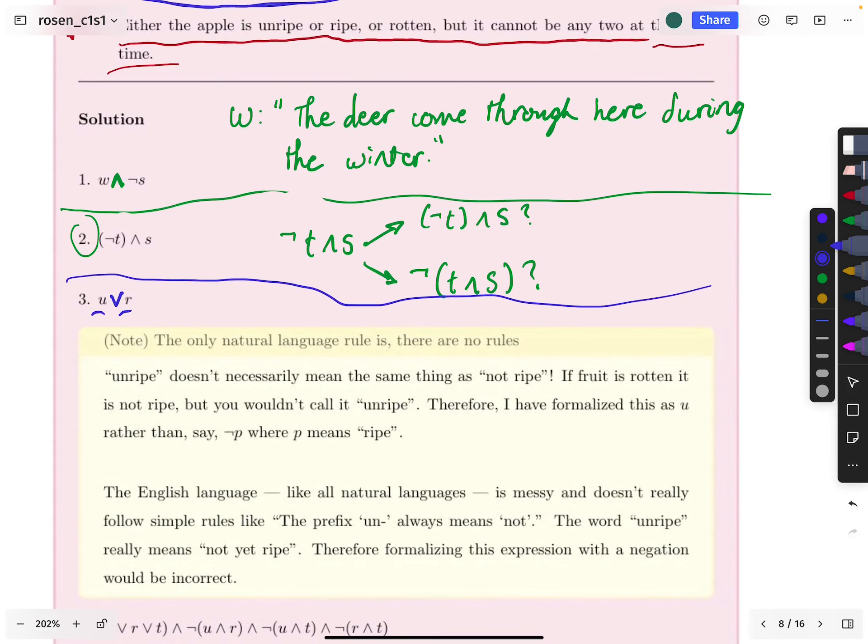By the way, you might think that maybe I ought to represent this as the negation of ripe and have like some separate symbol for ripe and then negate that. Well, I would argue that that is incorrect because unripe is not the same as the negation of ripe, which you might need to think about for a minute to appreciate. In particular, you can have food, fruit that is rotten and rotten is not ripe, right? Ripe means very ready to eat, basically, or in that ripe state of the fruit where it's not underripe. It's not sort of overripe or something like that. It is ripe. And so it's ready to be eaten.